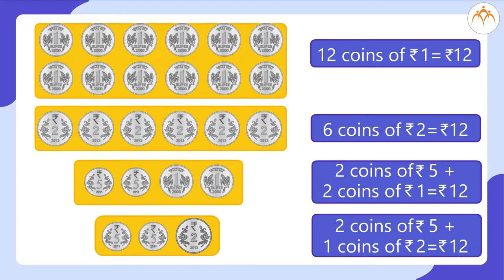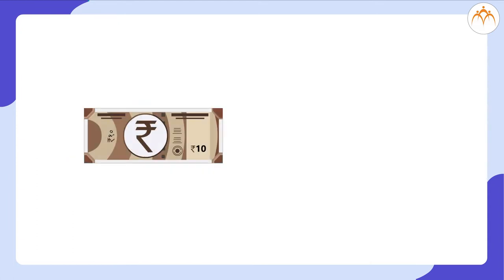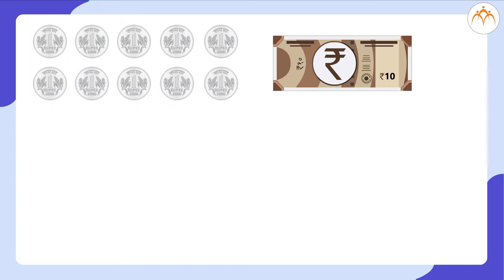I have one more combination. Look at this: 1 note of 10 rupees plus 1 coin of 2 rupees is equal to 12 rupees. Now, if I ask you which of these is the most convenient to carry in my pocket? Obviously, 1 note of 10 rupees plus 1 coin of 2 rupees. That means, instead of handling 10 coins of 1 rupee, it's easier to exchange 1 note of 10 rupees for them.